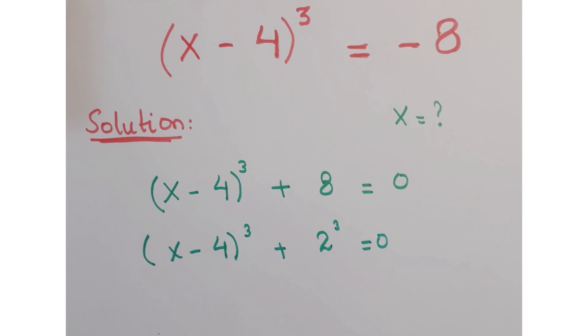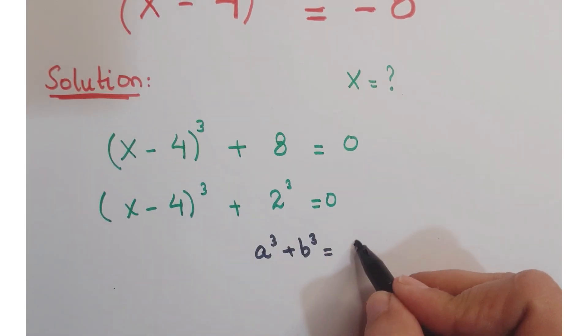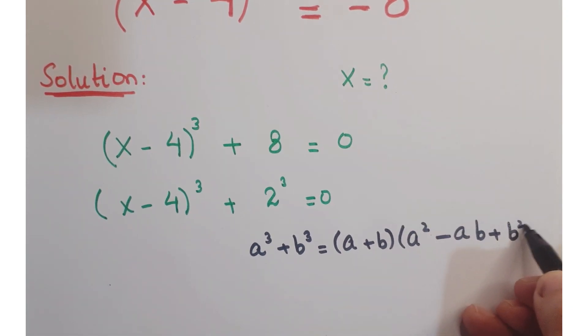Now here you can apply the algebraic identity, that is a cube plus b cube equals a plus b into a square minus ab plus b square.